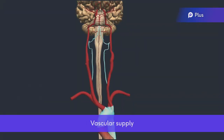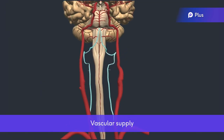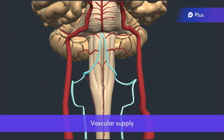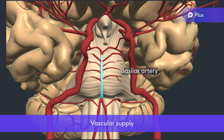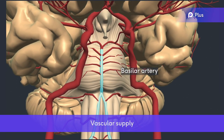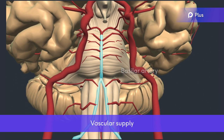In the brain, the vertebral arteries come together on the ventral surface of the brainstem to become the basilar artery. The network formed by the vertebral and basilar arteries is referred to as the vertebral-basilar system.